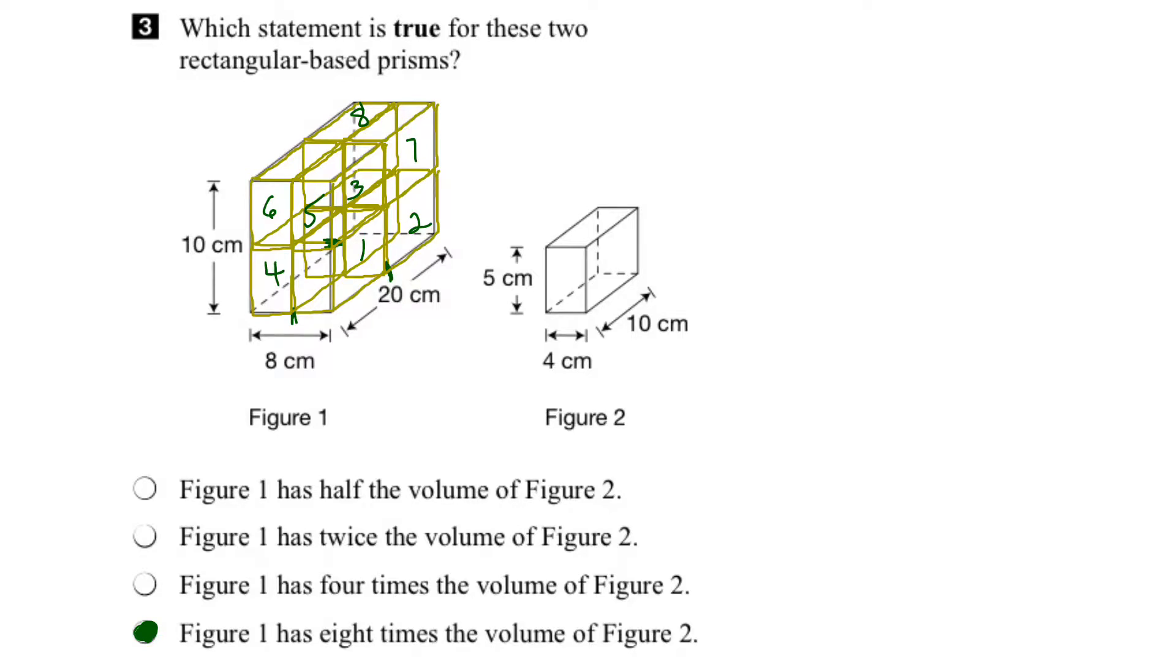We know that the volume of any rectangular-based prism is equal to the area of its base times its height. So volume equals the area of the base times the height, or if you prefer, length times width, which would be the area of the base times height.